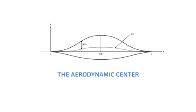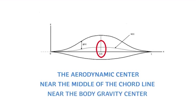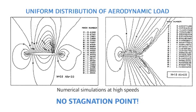The aerodynamic center is located near the middle of the cord line, near the body gravity center respectively. The aerodynamic load is distributed relatively evenly along the body surface and has no stagnation point.